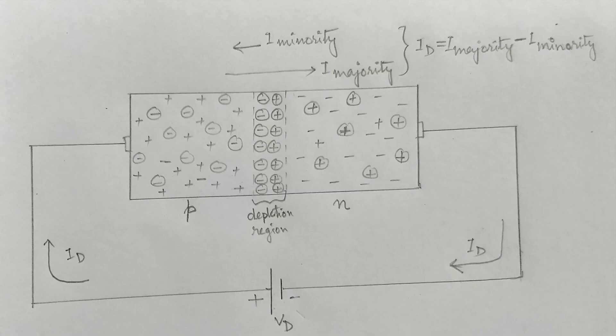From the previous lectures, we have seen that in the forward bias case, there are a large number of electrons that move from n-type material to the p-type material,